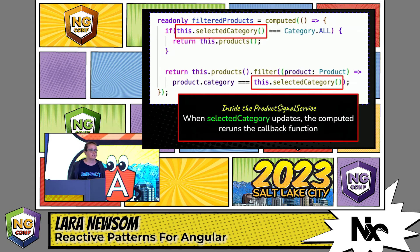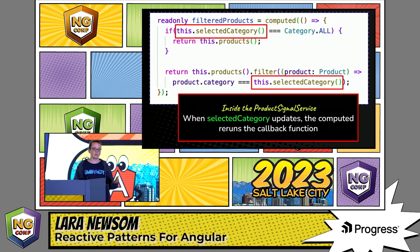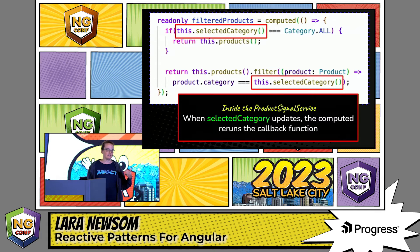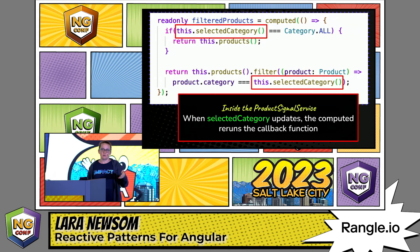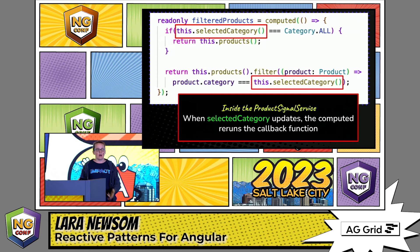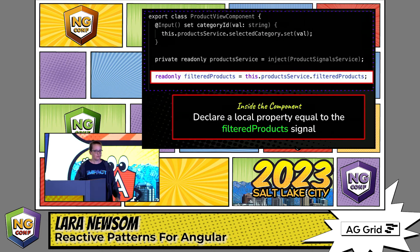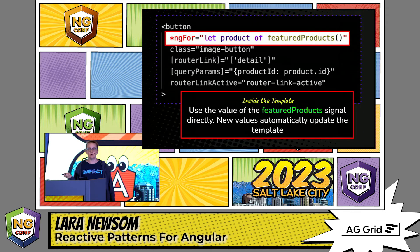In the signals version, we still declare a public property on our class, but this time we use the computed function. It takes a callback that uses selectedCategory and products. Since signals track their consumers, if a new value comes in for selectedCategory it will rerun that callback inside computed and we get new products. In the component we set a local property, and in the template we no longer need the async pipe because we use the signal value directly.